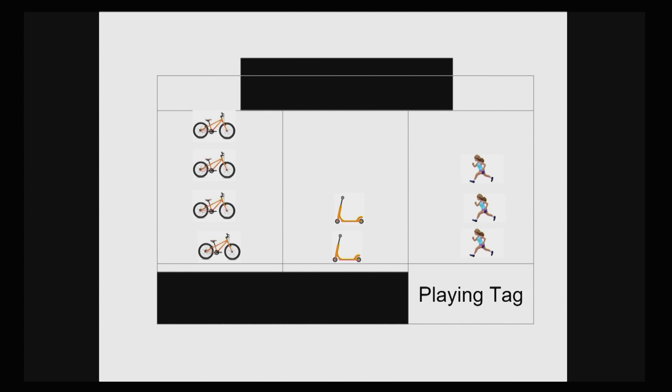This is a picture graph, and each image represents one. Picture graphs are graphs that use pictures to show and compare information. Picture graphs use different pictures to represent the different categories.